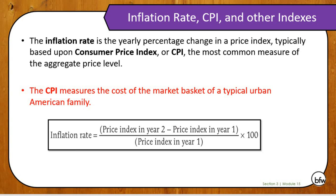The CPI measures the cost of a market basket for a typical urban American family. They have different goods that they put into it. If you look at the bottom of your notes, I put in a pie chart that shows you what goods make up the CPI market basket. They assign a weight to the price and values of all those things. It's a little more complicated than what we'll do in this class, but we're going to keep it as simple as possible.